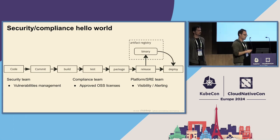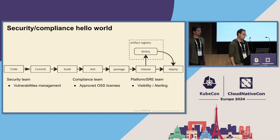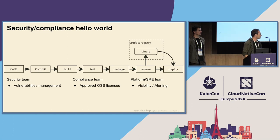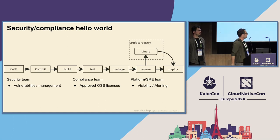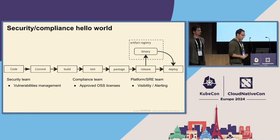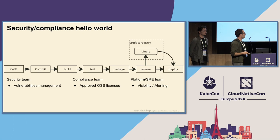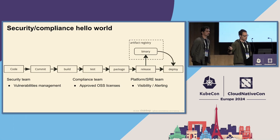For example, you might have a security team asking for a mechanism to manage vulnerabilities. Or you might have a compliance team that wants to make sure that some open source licenses for third parties don't go through. And of course, you might have an SRE team or a platform team that wants to make sure that the system is healthy. This gets more complex the bigger the organization is.